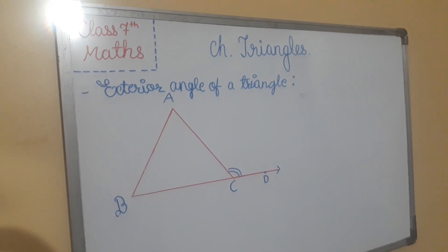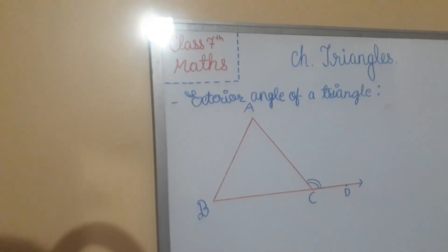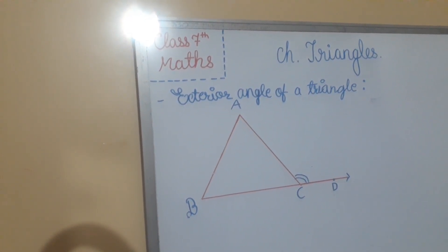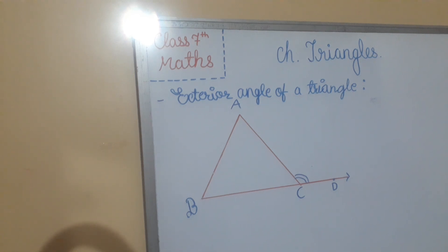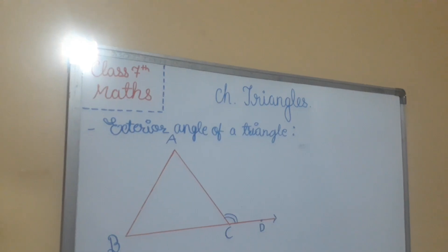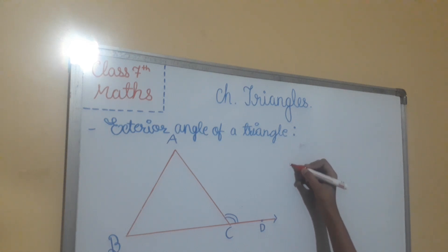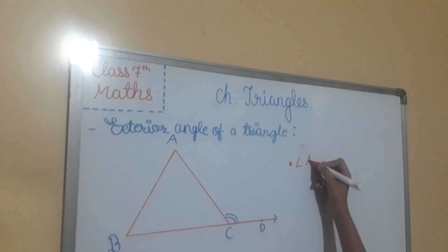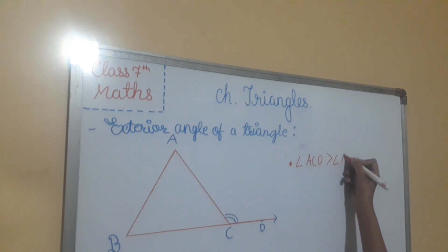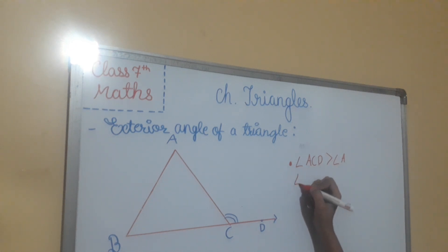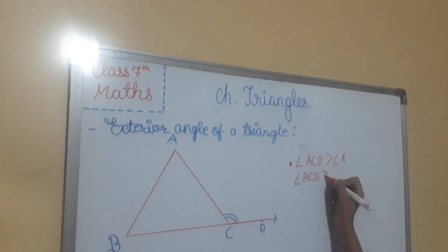Now we will learn about the exterior angle of a triangle. When a side of a triangle is extended, an exterior angle is formed. In triangle ABC, side BC is extended to point D, which is the exterior point of the triangle. The exterior angle of a triangle is greater than either of the interior opposite angles. Like angle ACD is greater than angle A, and angle ACD is greater than angle B.